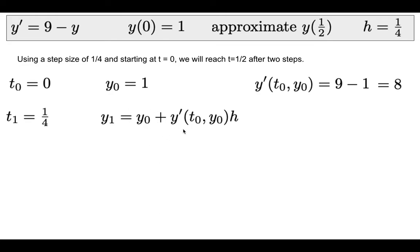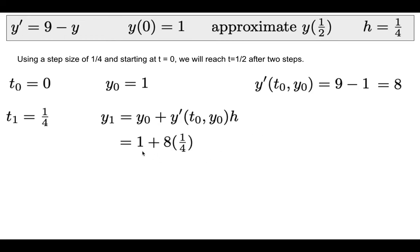To calculate the next y value, we take our previous y value and add to it the slope at our previous point times the step size. Since slope is vertical distance over horizontal distance, and h is a horizontal distance, multiplying them together cancels the horizontal distances and leaves a vertical change, which we add to our previous y value to get the new y value.